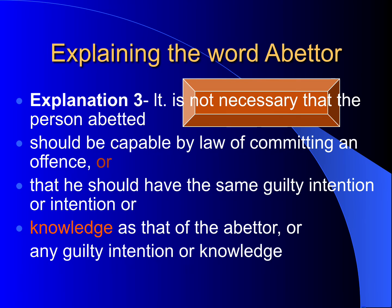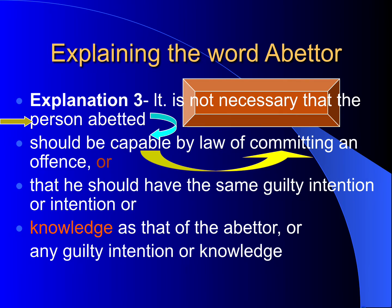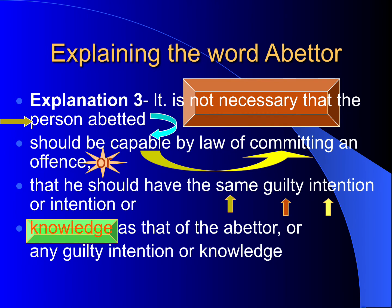The third explanation says it is not necessary that the person abetted should be capable by law of committing an offence. Therefore, if the person whom you abetted is a minor, or of unsound mind, or whatever — a legal incapacity — but commits or does not commit an offence, the abetment is complete. The abettor must be a competent person; the person committing the offence need not be competent, nor need he have the same guilty intention or knowledge as that of the abettor.